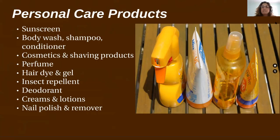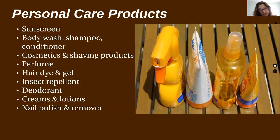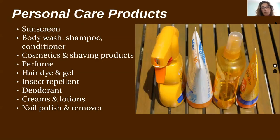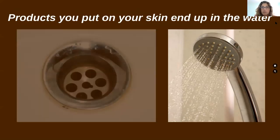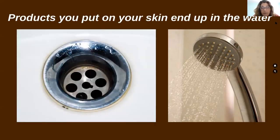Personal care products are a section that surprises a lot of people. These do not fall under the category of household hazardous waste — they go in the trash if you're not going to use them — but there are some really toxic, problematic ingredients in these items. By personal care product, we're talking about anything you put on your skin: sunscreen, body wash, shampoo, perfumes. Your skin absorbs them, and whatever's in that product will literally go into your body. When you shower or swim, those materials also wash off and go into the wastewater stream, and not all of these products are screened out at the wastewater treatment plant.